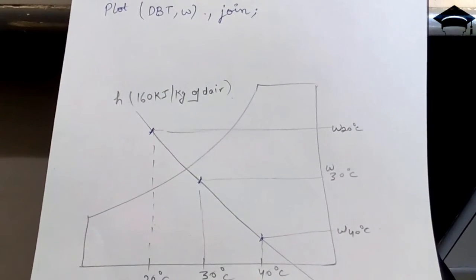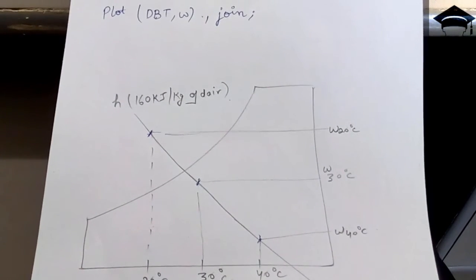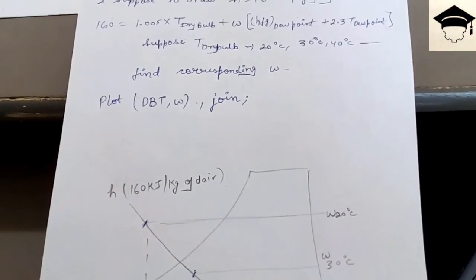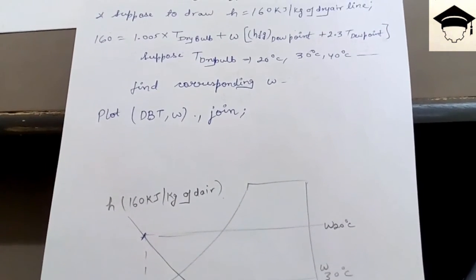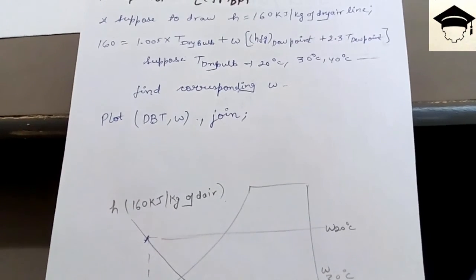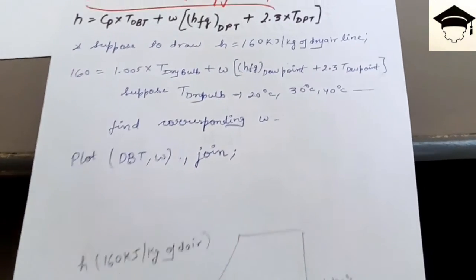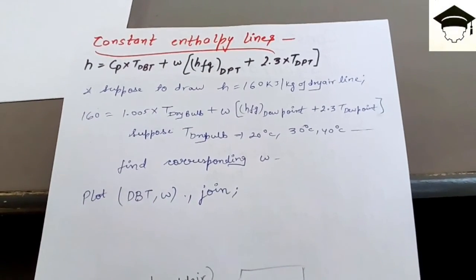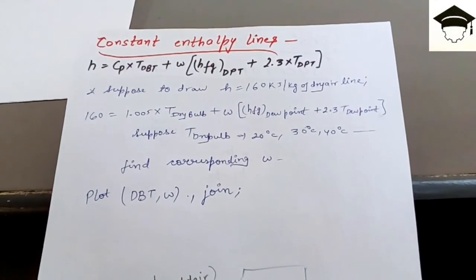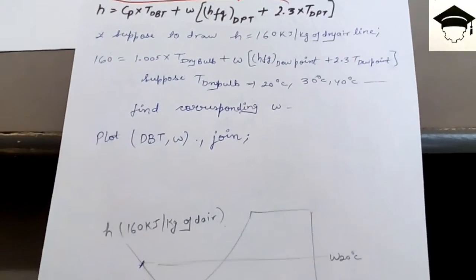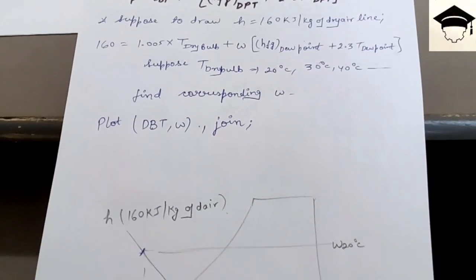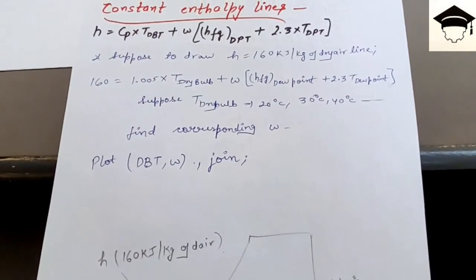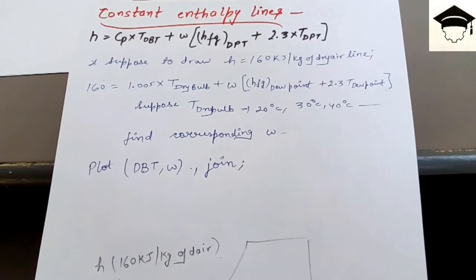Also, the constant wet bulb temperature lines are the same as constant enthalpy lines, because the constant enthalpy of moist air represents the enthalpy of moist air. So the enthalpy line and the wet bulb temperature line are represented by the same line.